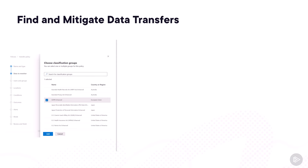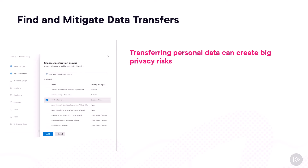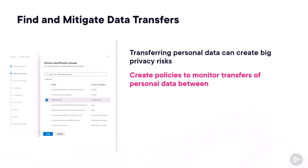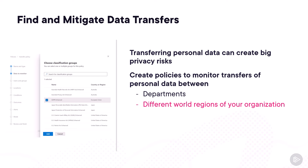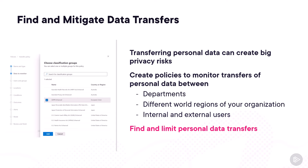Next, let's talk about finding and mitigating data transfers. Transferring personal data can create a big privacy risk for an organization. Microsoft Priva allows you to create policies to monitor the transfer of personal data between departments or different world regions of your organization, or between internal and external users. Those policies allow you to find and even limit personal data transfers — for example, you can automatically block messages in Teams that go against your policy.